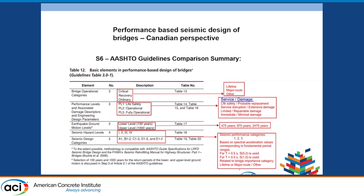Starting at the high end, which is the most damage and the lowest service level, we start with life safety, where the damage is probable replacement. Then we go to service disruption with extensive damage, then limited and repairable damage, and finally immediate minimal damage.